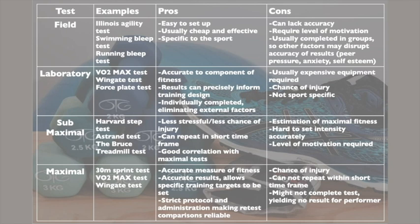Submaximal tests — examples include the Harvard step test, Astrand test, and the Bruce treadmill test. Pros: less stressful, less chance of injury, can repeat in a short time frame, good correlation with maximal tests, and can also be performed on mass — many people at once, such as when you do the bleep test or the Harvard step test in a lesson. Cons: it's an estimate of maximal fitness, and it's hard to set the intensity accurately because it's up to the performer to set the intensity as they're performing — hence there's a level of motivation required.